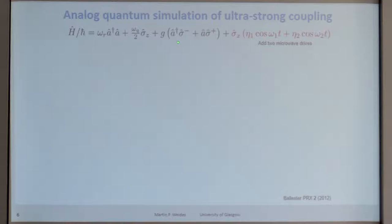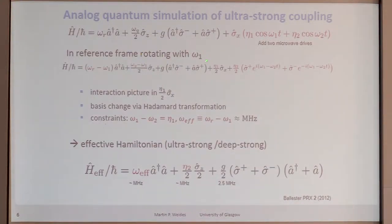Now, the Solano group had a theory proposal a few years ago, and they showed a way to analog implement a quantum simulation of the Rabi model by starting with a Jaynes-Cummings type system, having strong coupling, and adding two microwave drives, both with a certain frequency and amplitude, eta-1, eta-2. And there's a bit of math involved. Essentially, one has to go into the reference frame of the first drive, then go into the interaction picture of the qubit, do some basis change. There are some constraints on the frequencies and amplitudes.